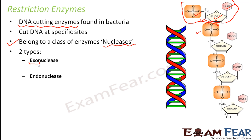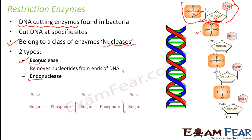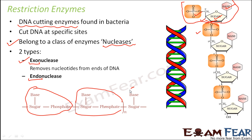The word exo always means exterior or outside, and endo means inside or interior. So exonuclease is any enzyme which removes nucleotides from the ends of DNA — that is from the outer portion or from the exterior side. In DNA you have the sugar, phosphate, and base together forming one nucleotide, then another sugar, phosphate, and base forming another nucleotide, and similarly a third nucleotide. So one by one, nucleotides joined together form a polynucleotide, and this is how each strand of DNA is formed.